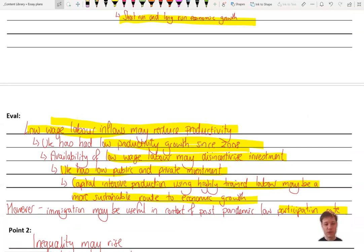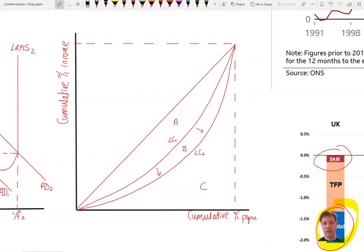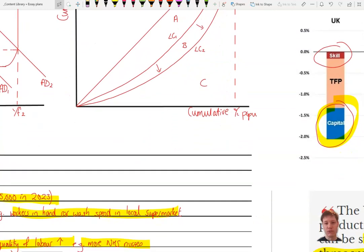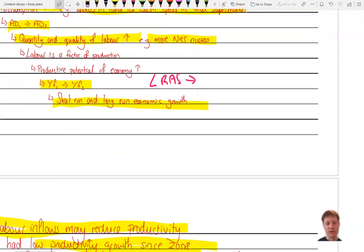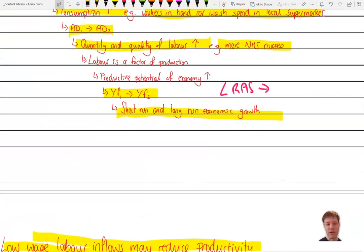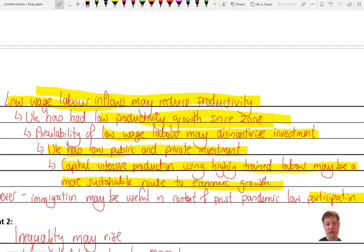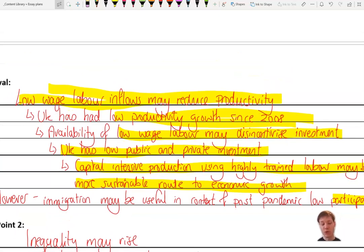Right. Our second point, using the Lorenz curve and the Gini coefficient, how is that going to be affected by immigration? And the argument is that it may well result in higher inequality. Think about how you could make this argument. There are multiple ways in which you could create this argument.